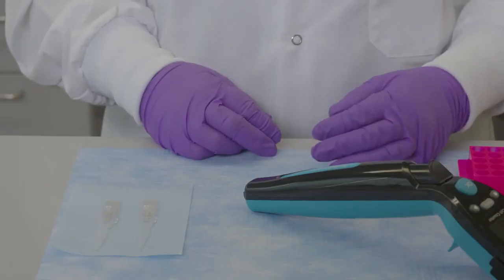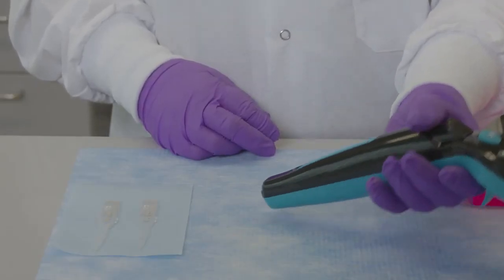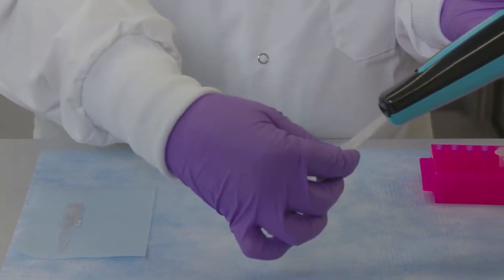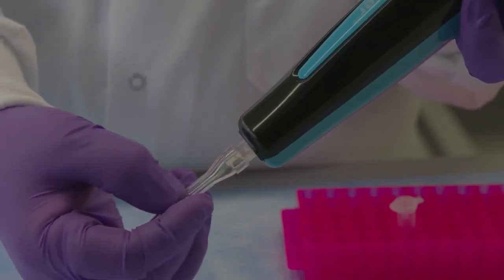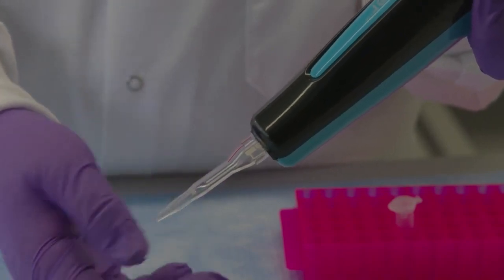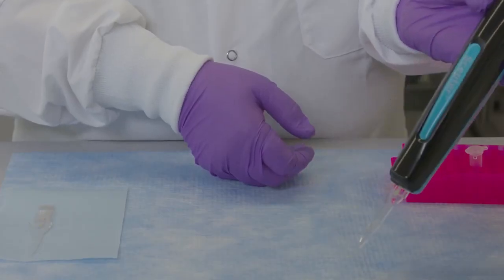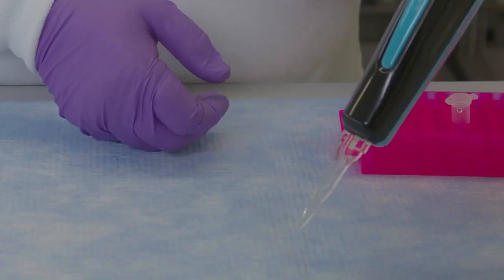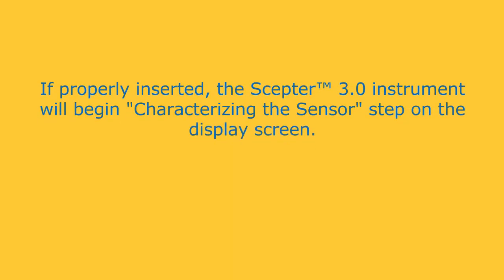Making sure that both the instrument and screen and sensor's stamp size are facing you, gently but firmly insert the sensor into the sensor port of the SEPTER 3.0 instrument. Push the sensor until the sensor stop wings meet the instrument. If properly inserted, the SEPTER 3.0 will begin characterizing the sensor step on the display screen.